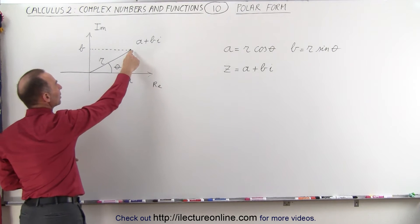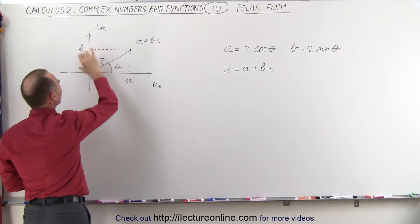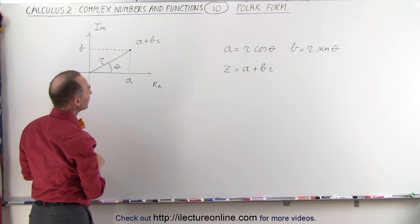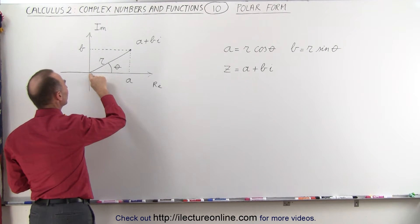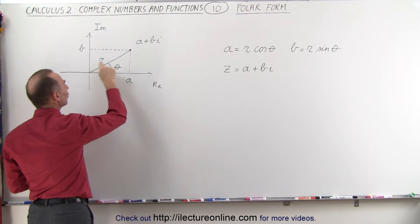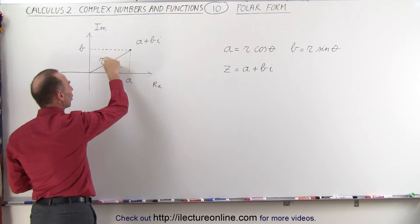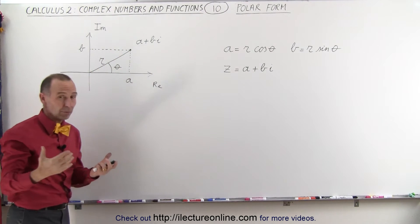We have a complex number that has a real part A and an imaginary part equal to B I. Notice we can represent that by considering the distance from the origin to that complex number and call it R, and of course that's very similar to the modulus.